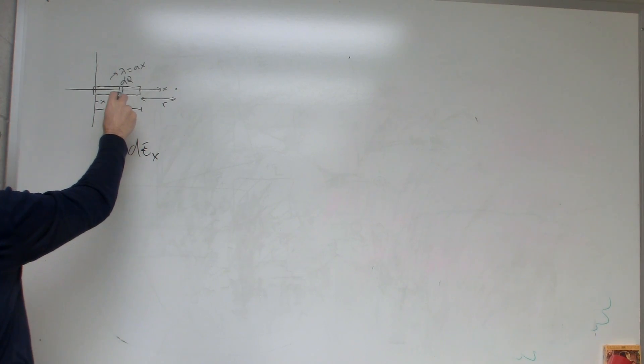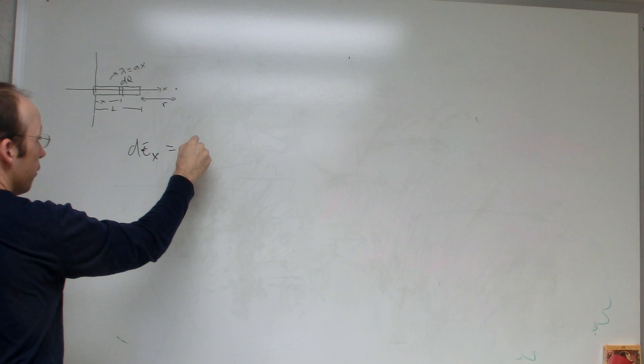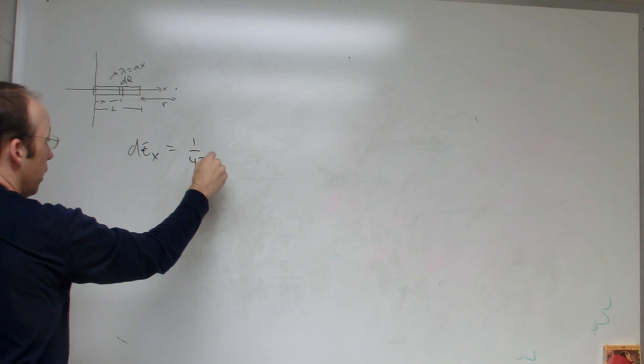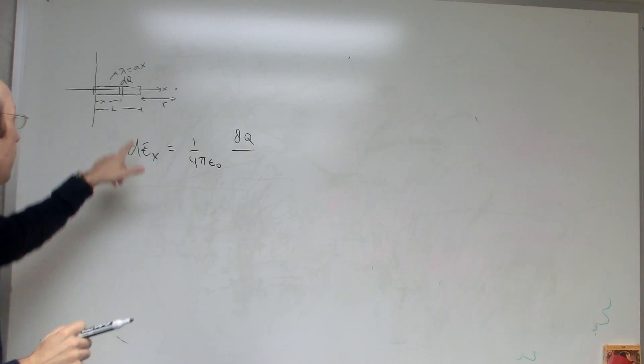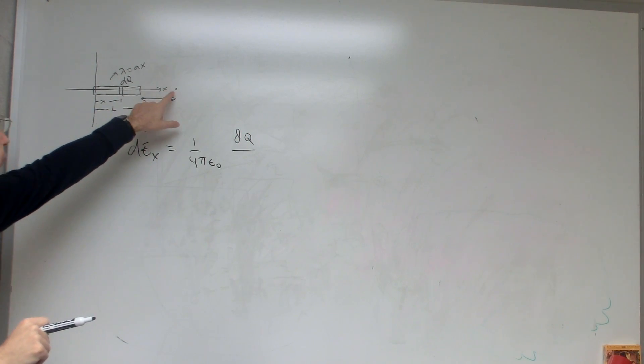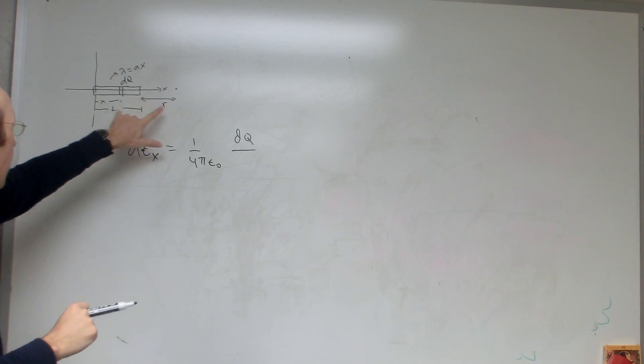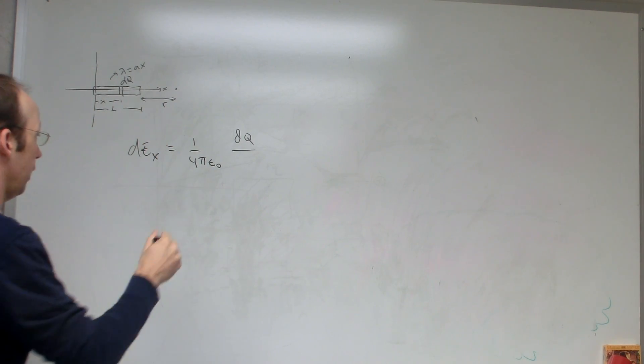It's going to be, I can treat this like a little point charge, so it's 1 over 4 pi epsilon naught dq, and then I divide by the distance from here to there squared. So this is going to be L plus r minus x.